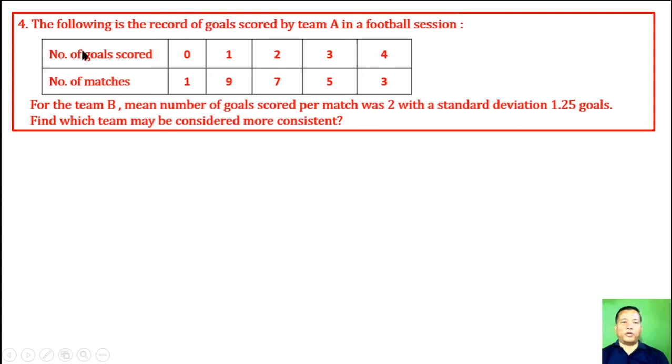Question 4. The following is the record of goals scored by team A in a football season. Number of goals scored is 0, 1, 2, 3, 4. Number of matches is 1, 9, 7, 5, 3. For team B, the mean number of goals scored per match was 2 with standard deviation 1.25 goals. Find which team may be considered more consistent.